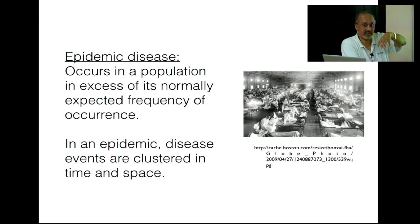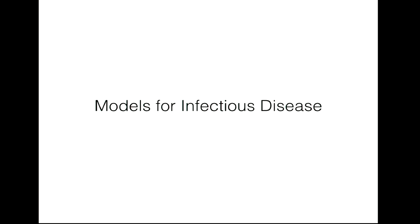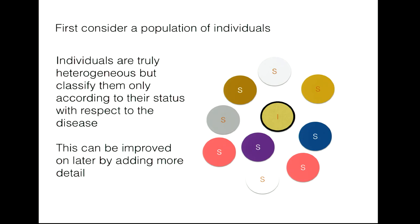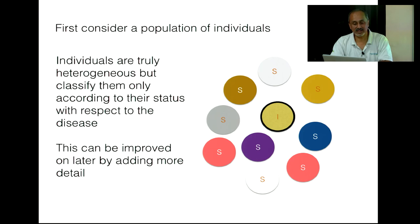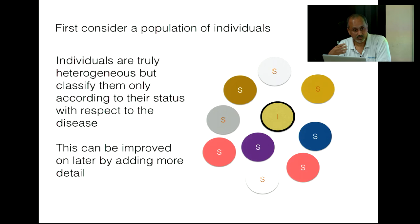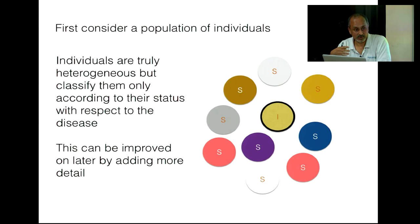To describe models for infectious disease, we start by noting that individuals are heterogeneous, but they can be classified by their status with respect to the disease. This gives rise to the classification of an individual as susceptible (S), infected (I), or recovered (R). People's susceptibility and contact patterns differ, but we first ignore these effects to build simple models, planning to add complexity later. We classify individuals very simply as susceptible, infected, and recovered.